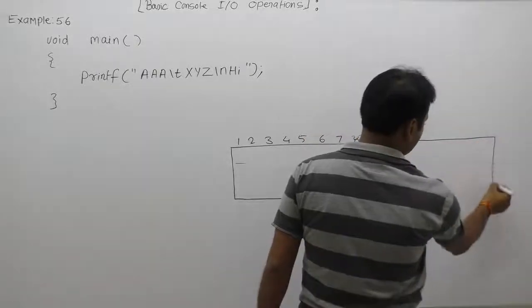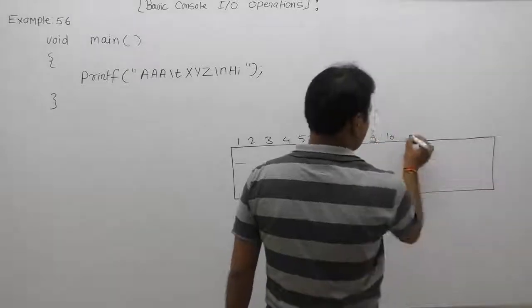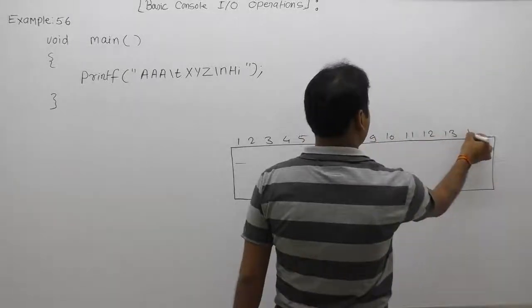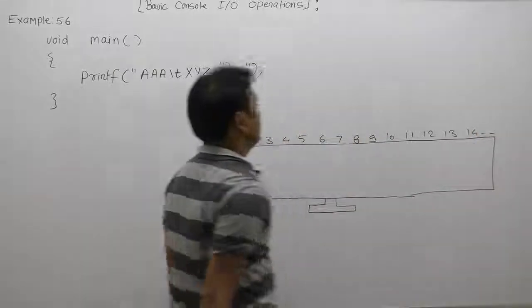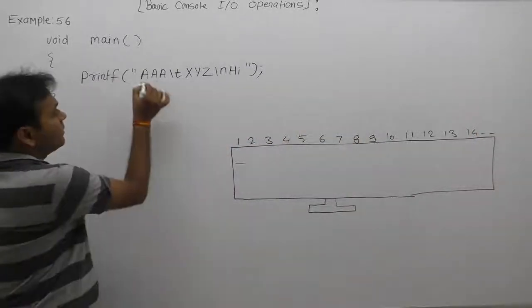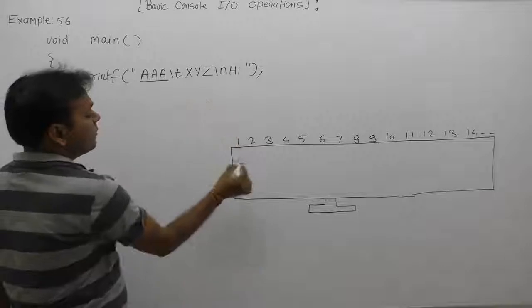11, 12, 13, 14, and so on like that. First of all it will display triple A - all are printable characters.